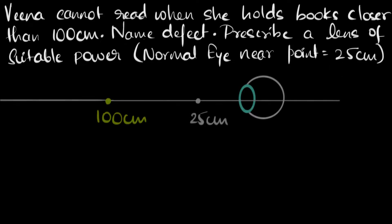So let's see what's given to us. If this is Veena's eye, then it's given that she cannot read when she holds books closer than 100 centimeters. So if anything comes closer than 100 centimeters, she cannot see it clearly. That means if it's outside of 100 centimeters, farther away than 100 centimeters, she can see it. I'm gonna put green over there saying that she can see objects over here. But if there's any object within 100 centimeters, then she can't see it. So we'll put red for that.